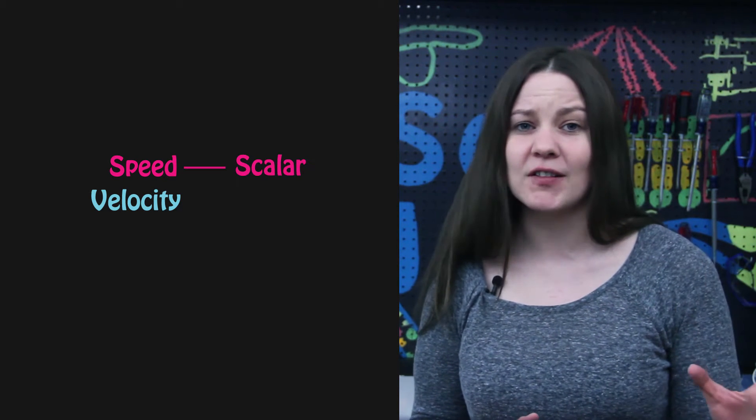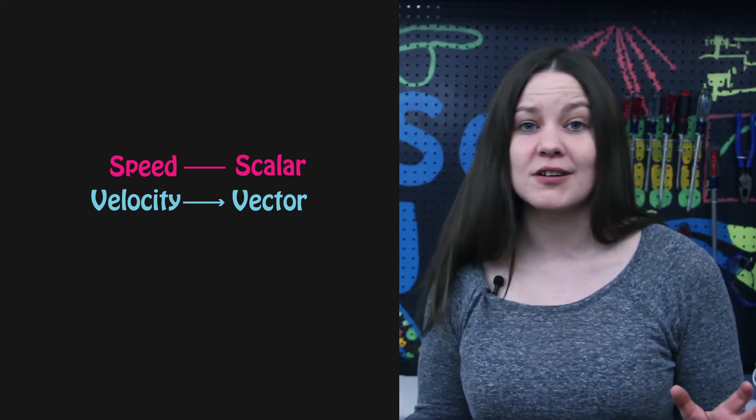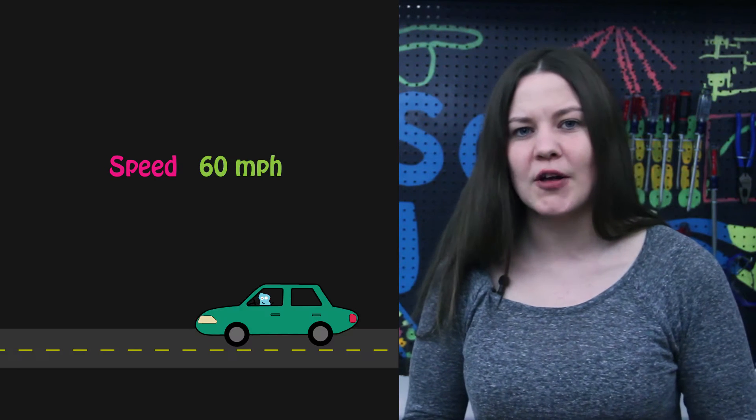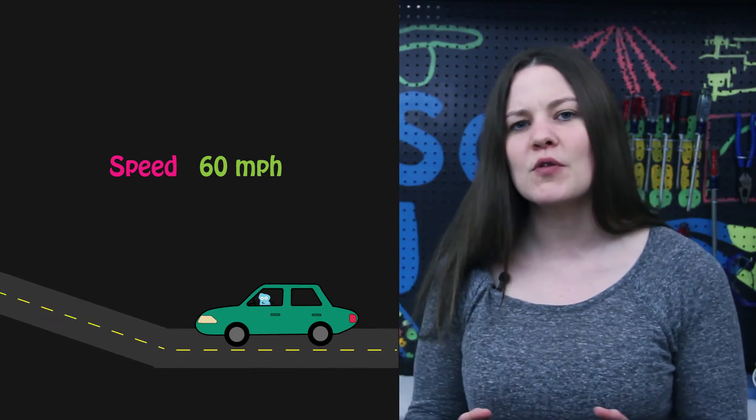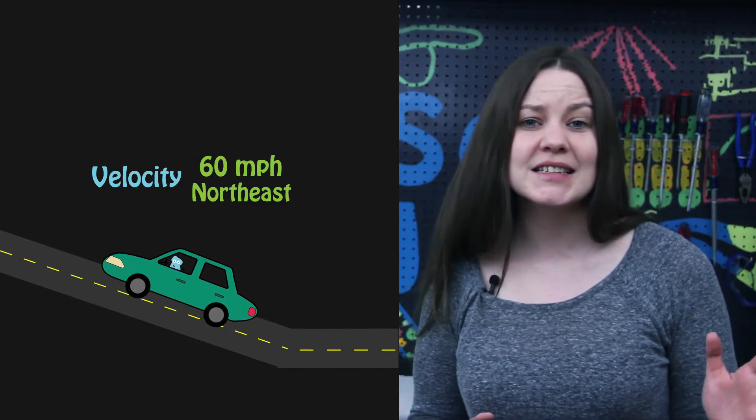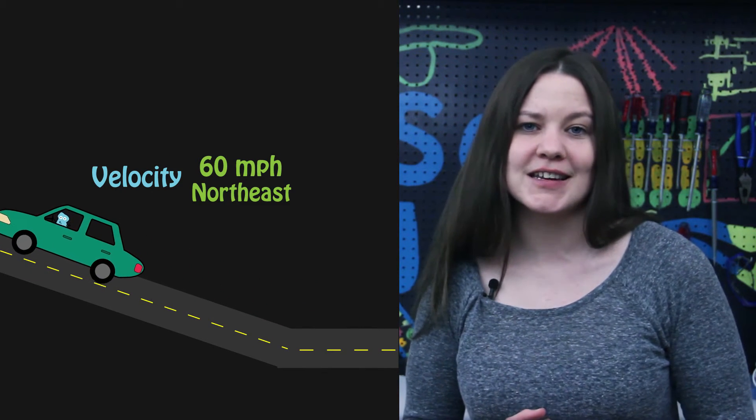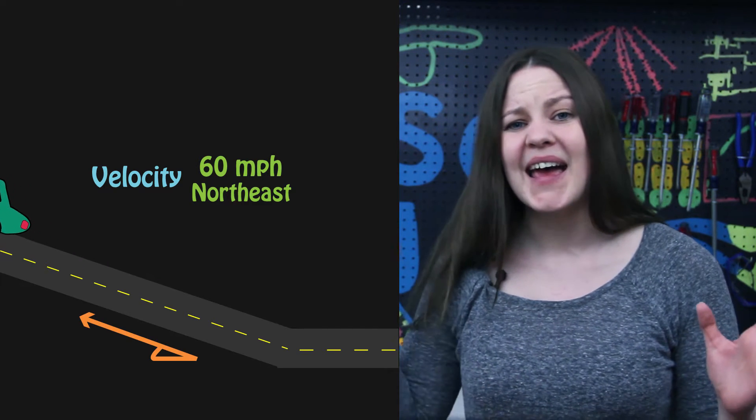But speed is a scalar, and velocity is a vector. If you say that you're moving 60 miles per hour in a car, you're describing its speed. If you're saying you're moving 60 miles per hour to the northeast, then you're talking about its velocity, because it now has a magnitude and a direction.